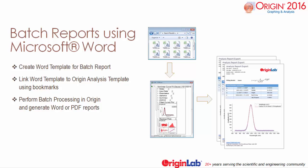When performing batch processing on multiple files, you can now create professional quality reports using a Microsoft Word template. Simply link the Word template to an Origin analysis template by mapping bookmarks to Origin worksheet cells, graphs, and metadata. This allows you to generate multi-page reports with headers and footers, as the report template is fully configured in Microsoft Word.